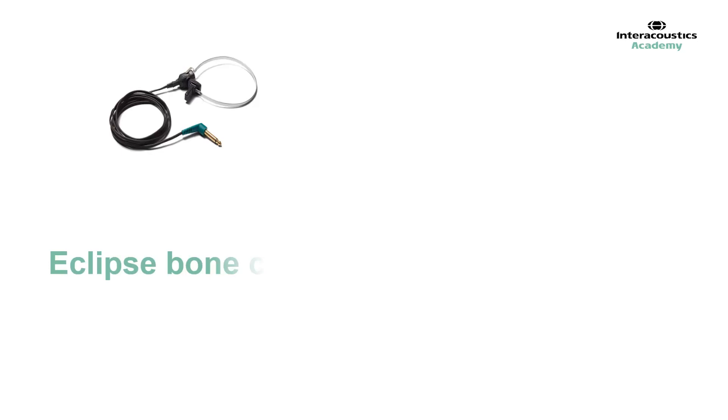There are two bone conductors available for testing using the Eclipse: the B71 and the B81, which allows for testing at louder intensities. When testing adults or older children via bone conduction, it is typical to leave the bone conductor attached to the headband and simply place this over the head as you would in normal pure tone audiometry.